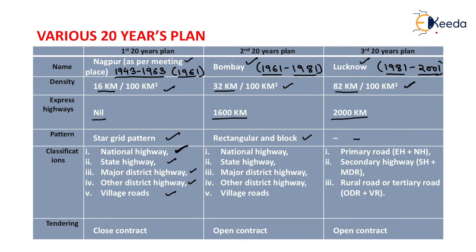State highways are the other main roads of a province or state. District roads take traffic from the main roads to the interior of each district or similar unit. According to their importance, some of these are considered major district roads and the remaining are known as other district roads.